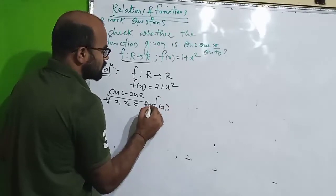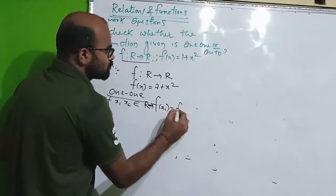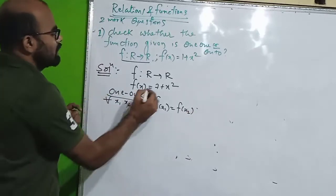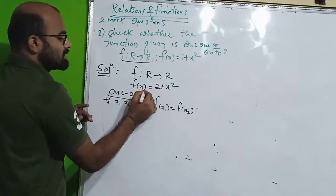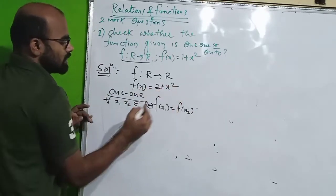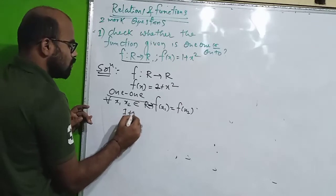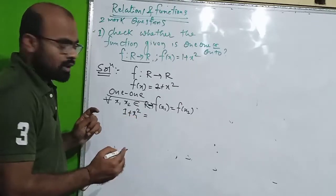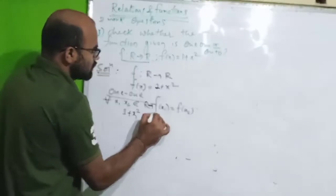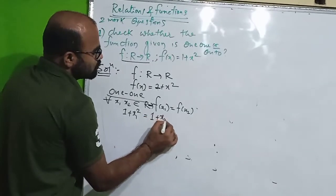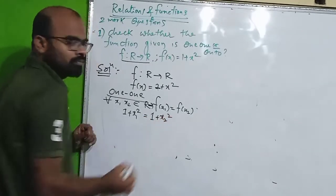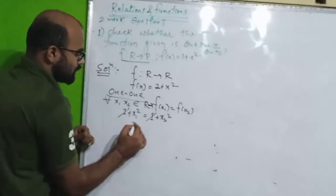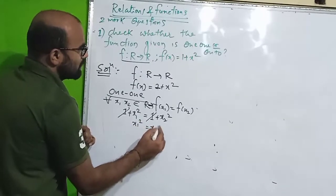For the one-to-one check, assume f of x1 is equal to f of x2. That means 1 plus x1 squared is equal to 1 plus x2 squared. The 1's cancel, so x1 squared is equal to x2 squared.